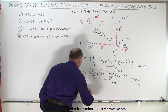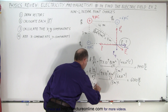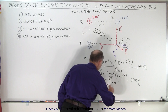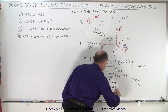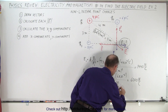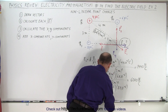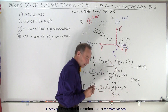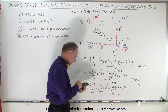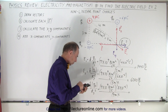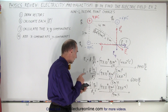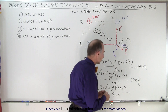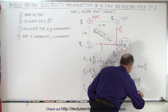Then we find E3 = K × Q3 / r3². That's 9 × 10⁹ N·m²/C² times 8 × 10⁻⁶ C, divided by 4 meters squared. So 9×10⁹ × 8×10⁻⁶ / 16 = 4,500 N/C. That's a little bit smaller, which makes sense because the distance is larger and since it's squared, it has a bigger effect. We now have the magnitudes of all three electric fields.